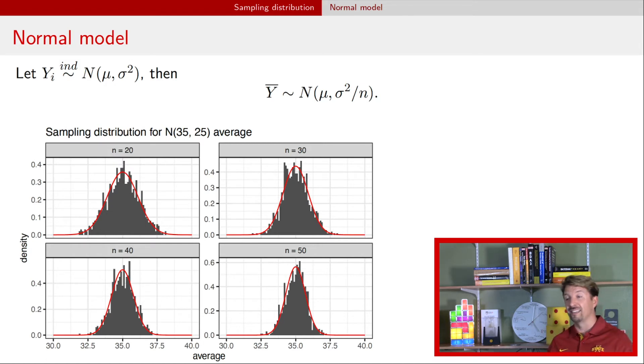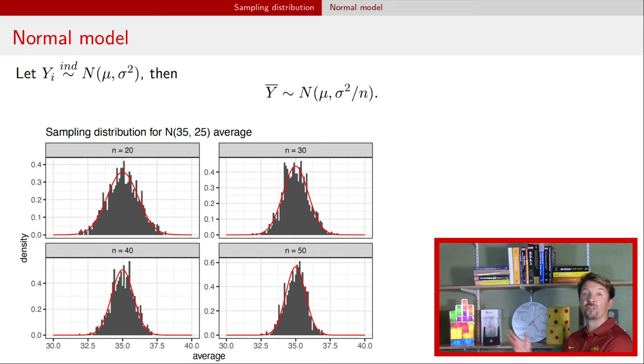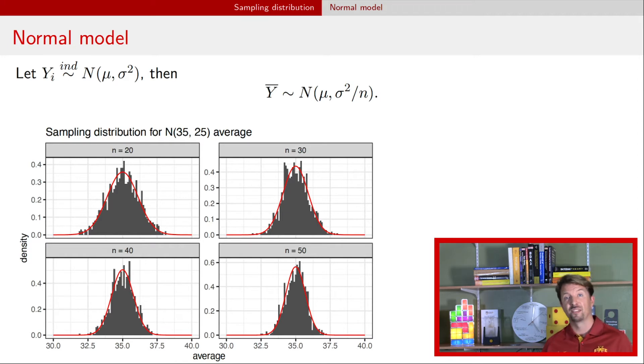They don't look perfect because we're only taking a sample — in this case a thousand realizations. But if we took more and more realizations, we would get closer and closer to that true sampling distribution.